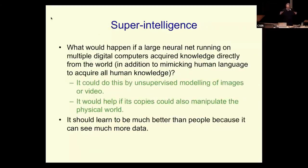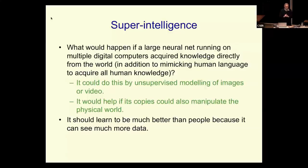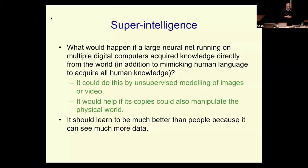If you had large digital neural nets running on multiple computers getting knowledge directly from the world — predicting the next frame in a video, wandering around with a camera, or predicting what happens when a robot arm moves — they could probably get knowledge much faster. Large language models are learning fairly abstract stuff, which is good, but they don't have much bandwidth because they're learning from a low-bandwidth string of words. These large models will get a lot better, especially when made multimodal — GPT-4 was trained with images as well as words, and particularly when multimodal, they could learn much more than us.